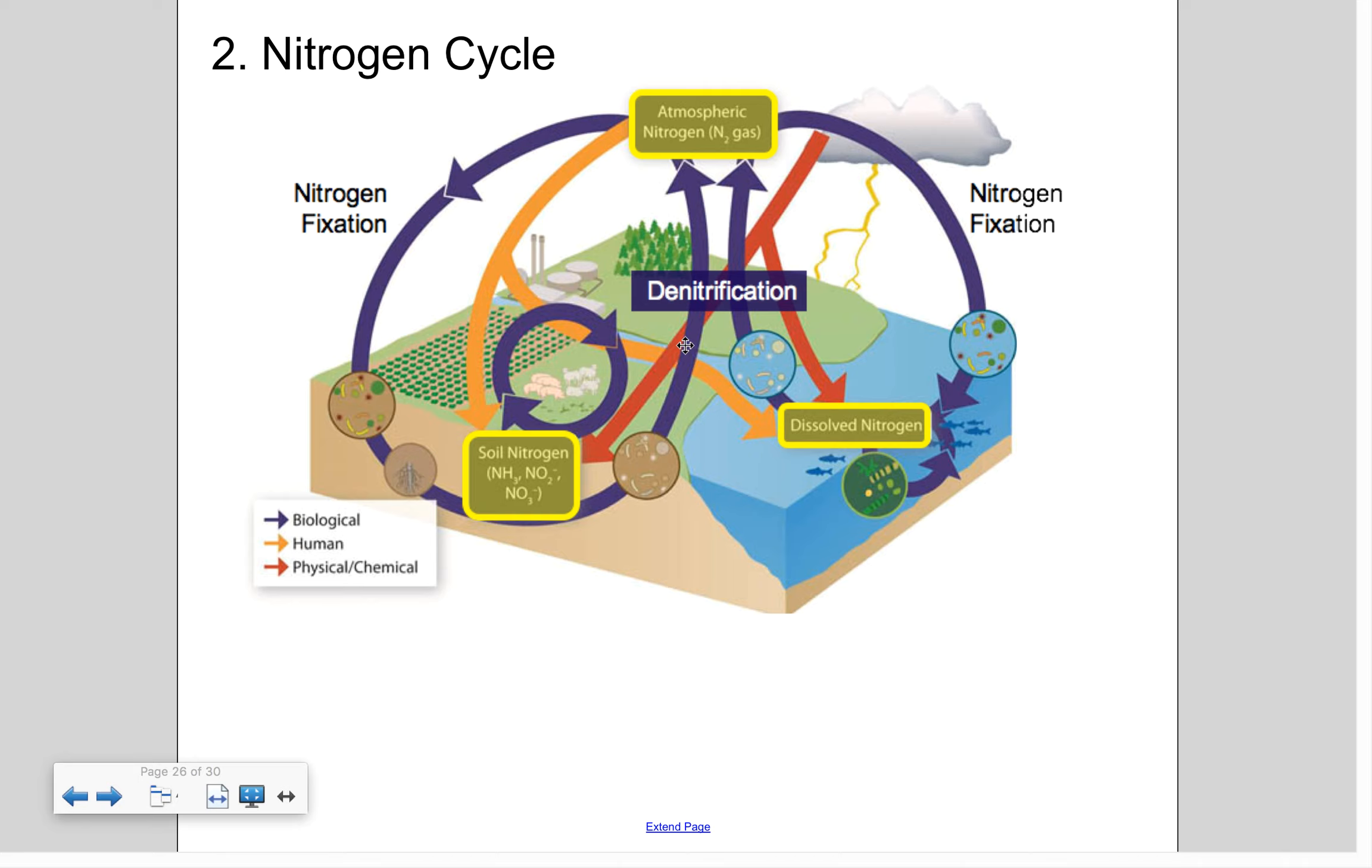All right, so that's pretty much the blue arrows. Now, moving on to the physical slash chemical. So lightning can fix a small amount of nitrogen in a process called atmospheric nitrogen fixation. So when lightning strikes, sometimes nitrogen gas gets converted into these nitrates, and so that's what they're trying to emphasize with these red arrows right there.